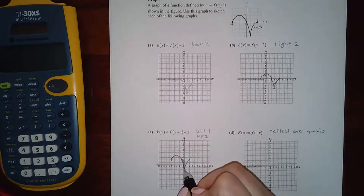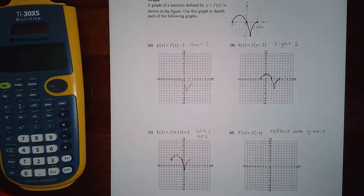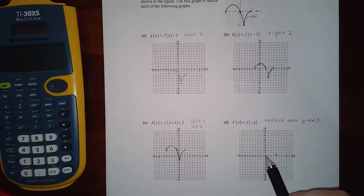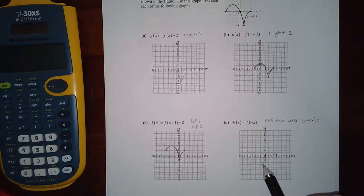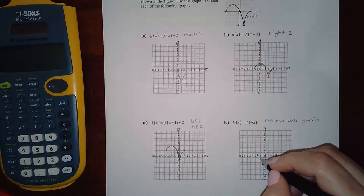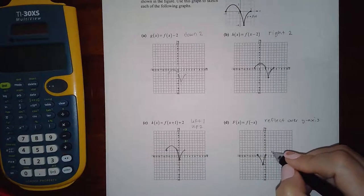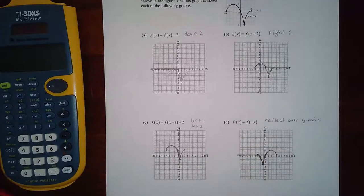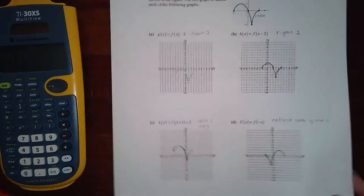Now the last one's reflecting over the y-axis. So negative four, zero goes all the way over to four, zero. Zero, zero when it reflects is the same spot. One, negative four will reflect over to positive one, negative four. And three, zero reflects over to negative three, zero. So this one will have a little curve, a little curve, and the hump can only go up two units. There we go — notice it's flipped over the y-axis.